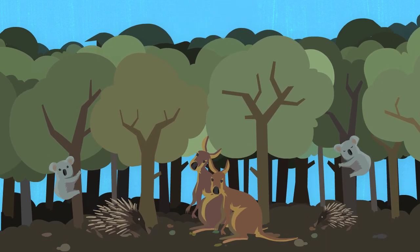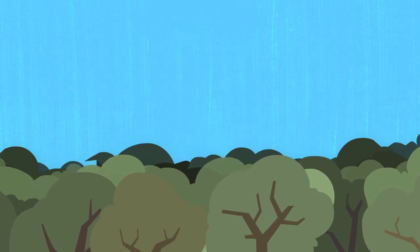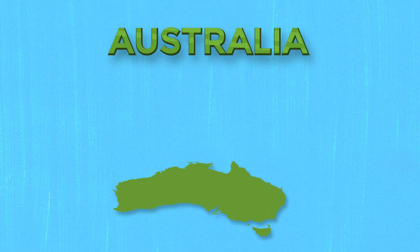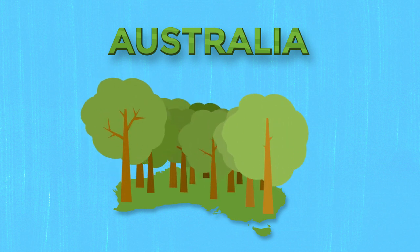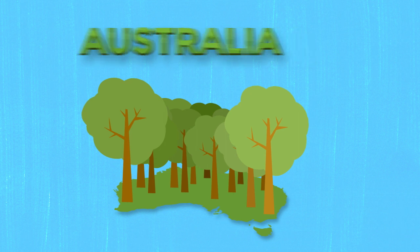At carbon neutral, all of our tree plantings take place in Australia. A biodiverse mix of local species is used to revegetate partially degraded, cleared land, providing a habitat for local fauna and flora.